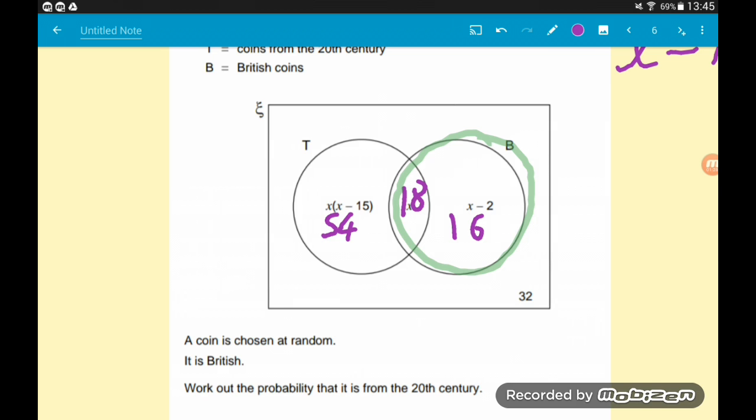The bottom of our fraction is the total number of coins in this now green circle, the total number of British coins. So 18 plus 16 is 34. That's the bottom of our fraction. How many coins in this circle are 20th century? 18. So we want 18 on top. So 18/34 is our answer.